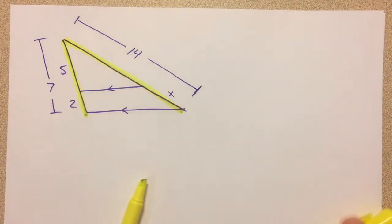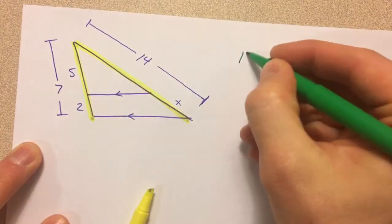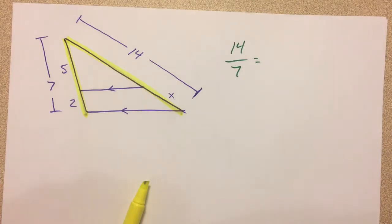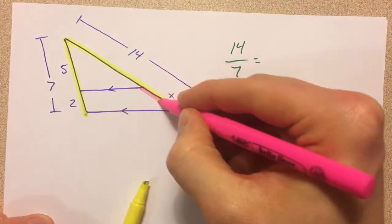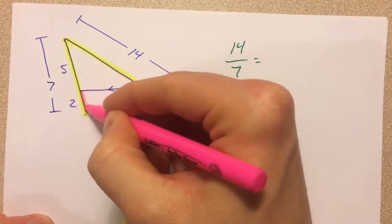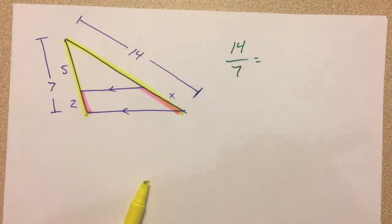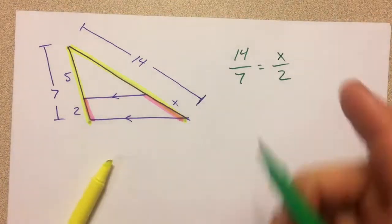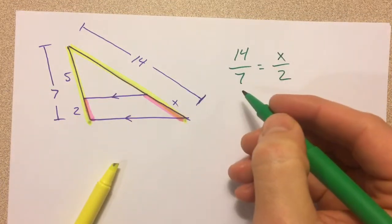And then the idea is, if I compare the 14 to the 7, I can compare the x with the 2. So I can just say, 14 over 7 equals x over 2. And I could just cross multiply and solve that.